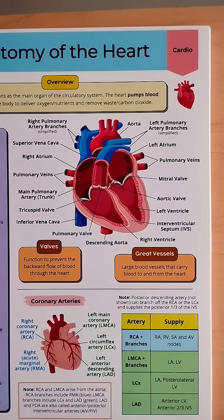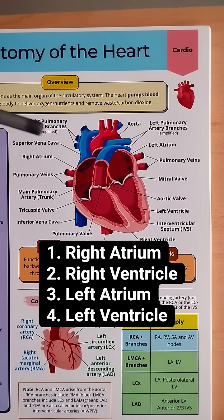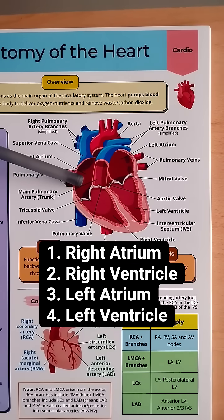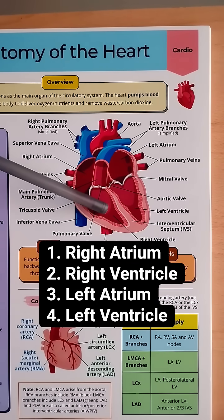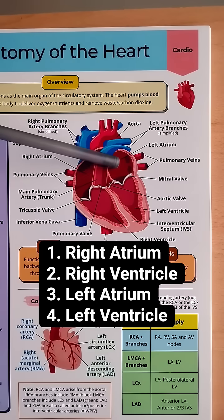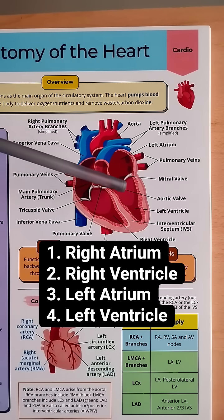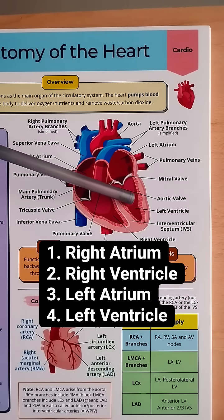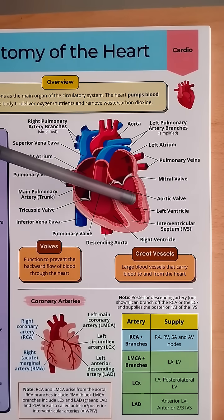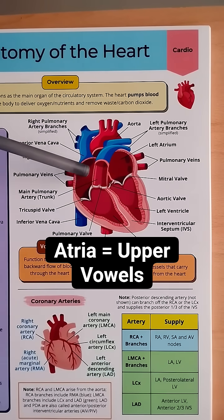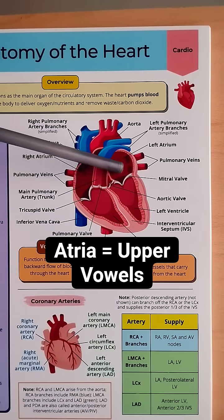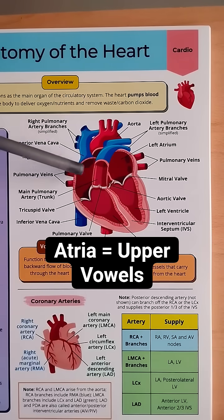Starting with the chambers of the heart, there's the right atrium in the upper right, right ventricle in the lower right, left atrium in the upper left, and left ventricle in the lower left. You can remember atria and upper because they both start with vowels.